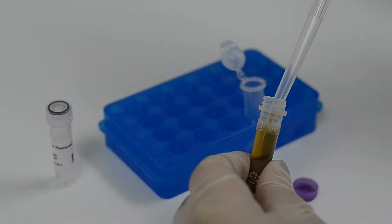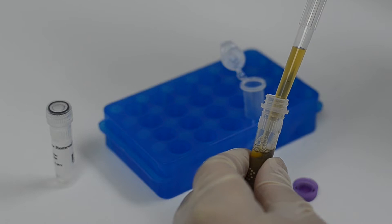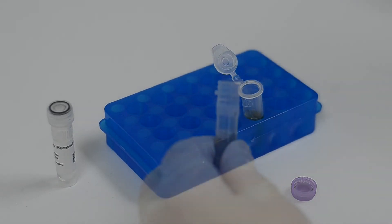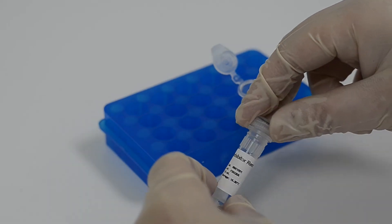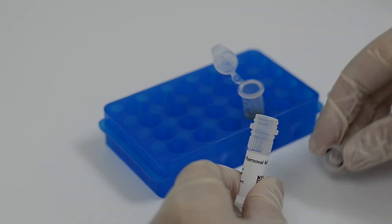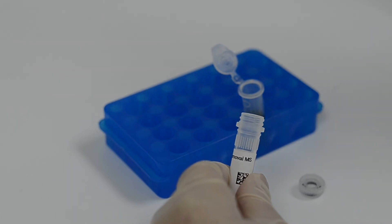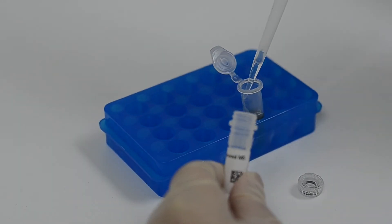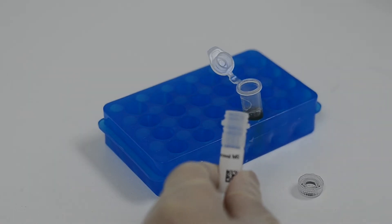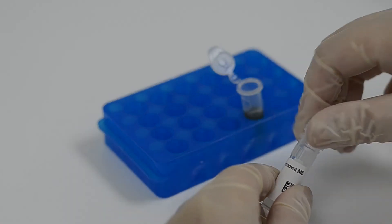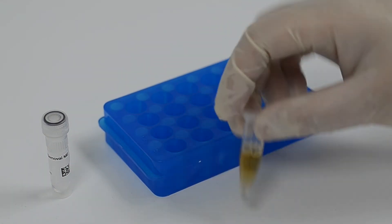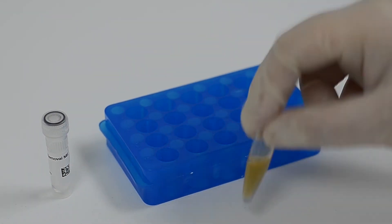Transfer 800 microliters of supernatant into a clean 1.5 ml microcentrifuge tube. Add 200 microliters of inhibitor removal MS. Mix thoroughly by inverting the tube for 20 times.